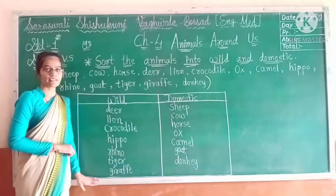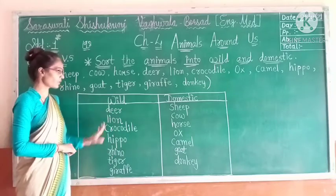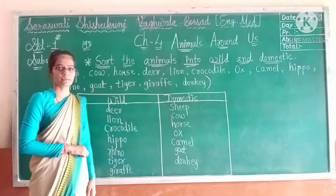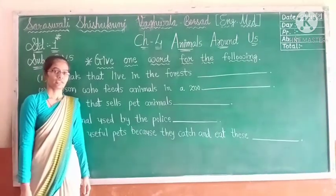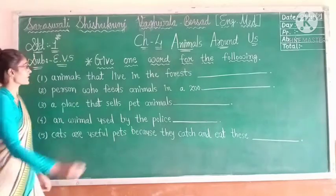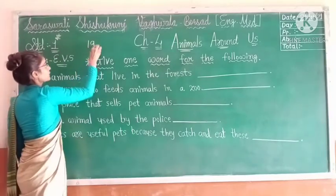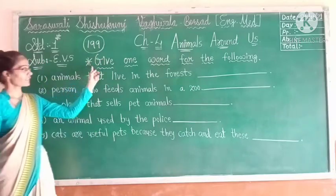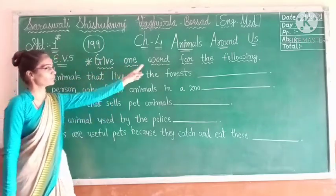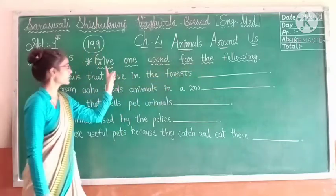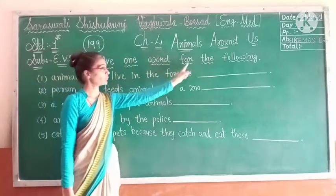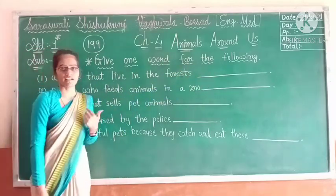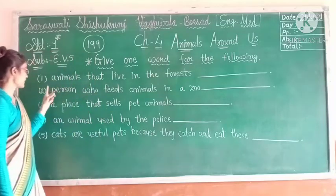I hope all of you understood this exercise and this is how you sort animals into wild and domestic. Now let's see the next exercise on page number 199. The heading is: Give one word for the following.